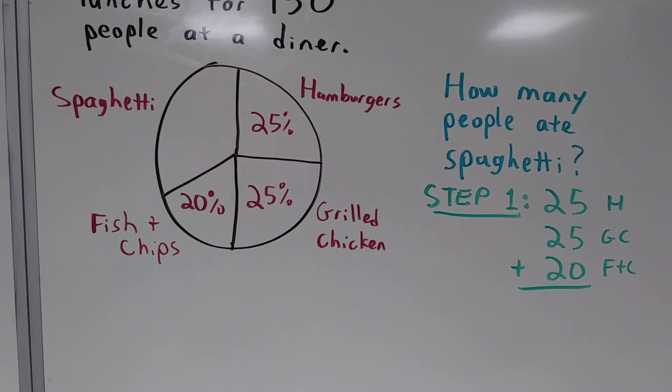For step one, we're going to add up the percentages for all of the other food items. This will give us the percentage of everyone who ate at the diner and ate everything but spaghetti.